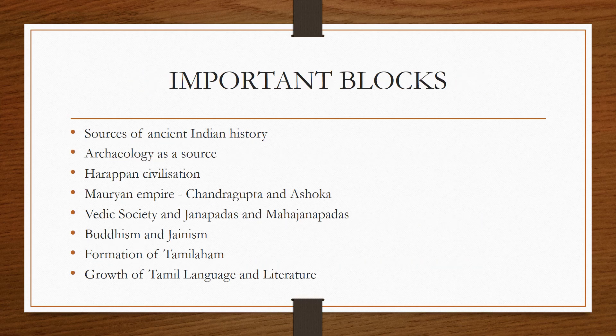Looking at the way the paper has been designed and how history is taught at the undergraduate level in India, what's very important is the Harappan civilization — what we used to call the Indus Valley civilization. There will also be questions from the introductory chapters on the sources of ancient Indian history and archaeology as a source. This block has been given much more depth this time, so at least one question will come from here — either in Section A for 20 marks or Section B for 12 marks.